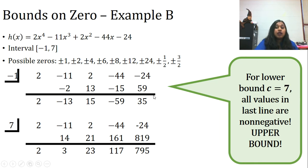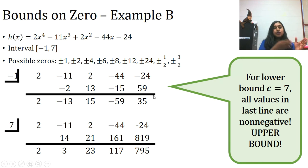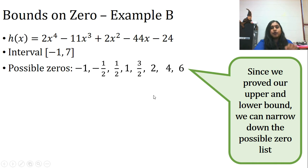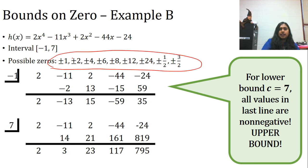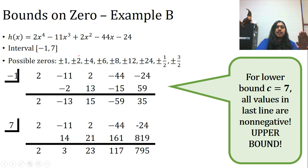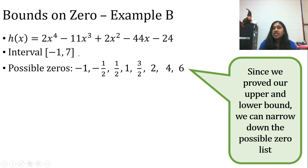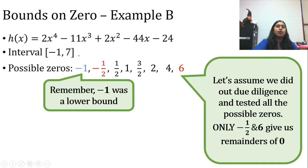What about my upper bound? All I have to know is that all the values on the bottom line are non-negative — it can include zero. The values are 2, 3, 23, 117, 75 — those are all non-negative. So seven is my upper bound. Now that we've proven our bounds, we can narrow down that list. My boundary goes from negative one to seven, so I eliminate potential zeros outside that boundary. Then we synthetically divide until we hit remainder zero, depress the polynomial, and repeat.